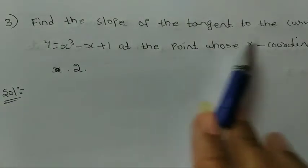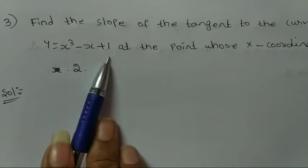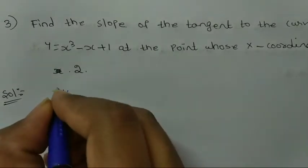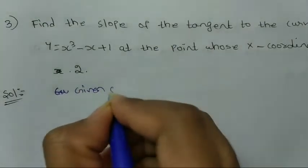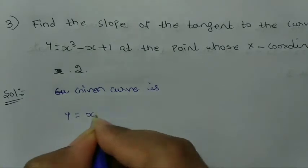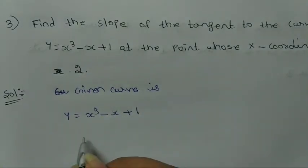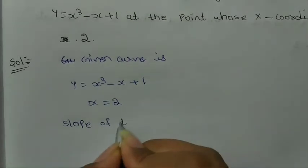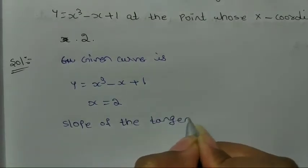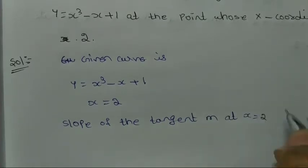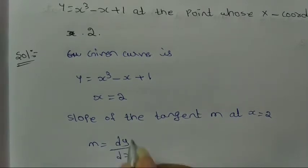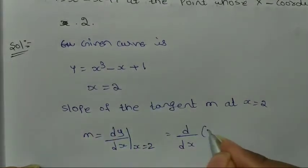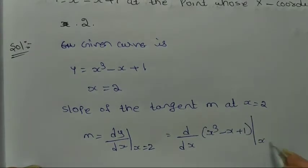Third question: Find the slope of the tangent to the curve y = x³ − x + 1 at the point whose x-coordinate is 2, so x = 2. Solution: given curve is y = x³ − x + 1. Slope of tangent m = dy/dx at x = 2, which is d/dx of x³ − x + 1 at x = 2.